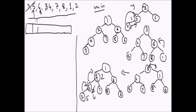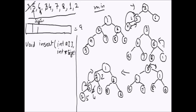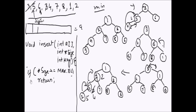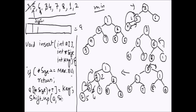Let's implement using an array. We take size starting from index 1. The insert function takes integer array a, integer size initialized to 1, and a key. If size is already greater than or equal to max elements, just return. Otherwise, set a[size++] = key, then call shiftUp(a, size - 1) and return.